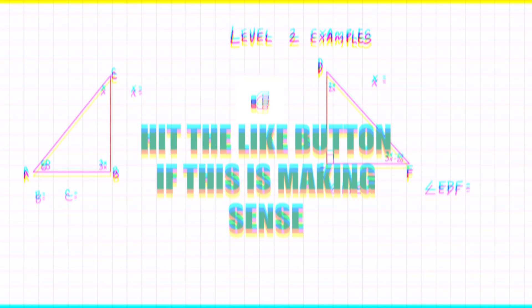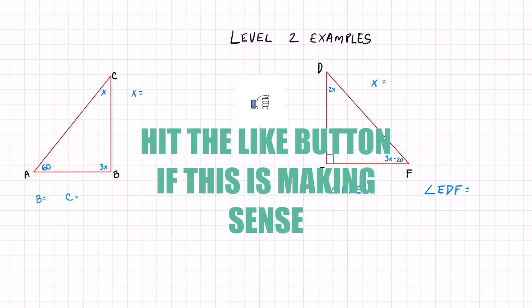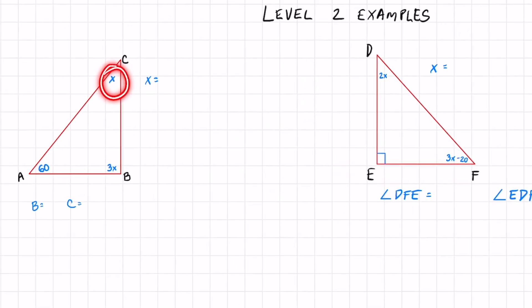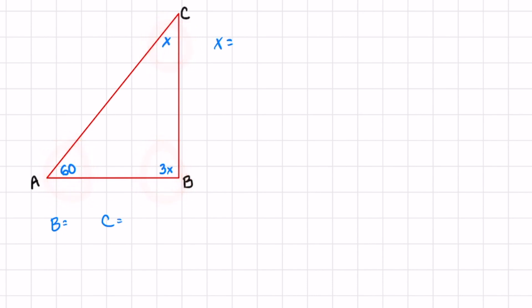Now we got more than one angle with expressions on it, and you're pretty much still doing the same thing. If I add all these up, I better get 180: 1x plus 3x, and don't forget that 60, and all of that will equal 180. This is just different because we're combining like terms with variables, so now you got 4x plus 60 equals 180.